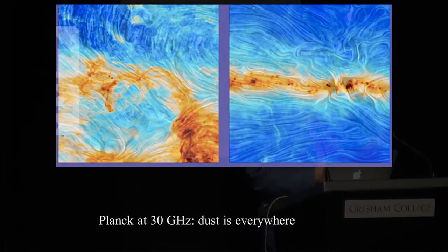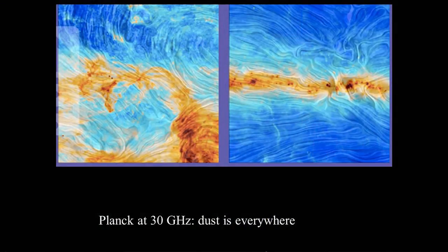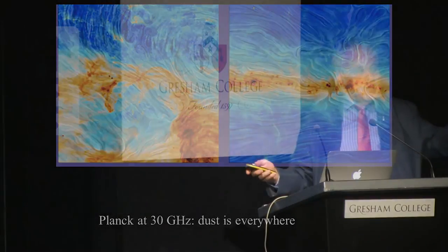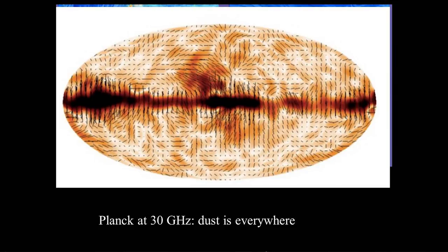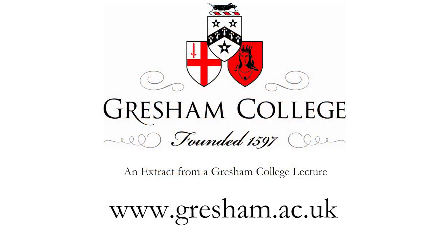The dust story is quite amazing. The Planck satellite has produced these amazing pictures of the dust in the galaxy, giving you polarization effects — these could be Van Gogh paintings. Dust is basically everywhere. This is the Milky Way itself, but you see dust far above the Milky Way too. All this would contaminate your signal and stop you seeing the beginning that you want to get to. This is the whole sky and you can see it's everywhere.